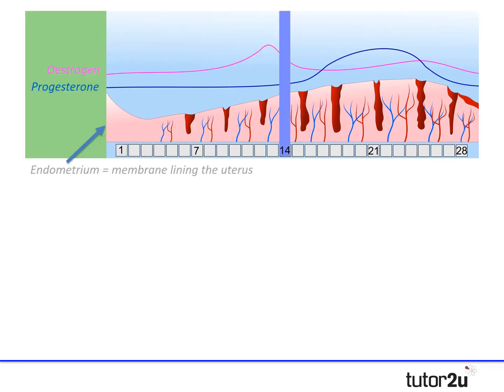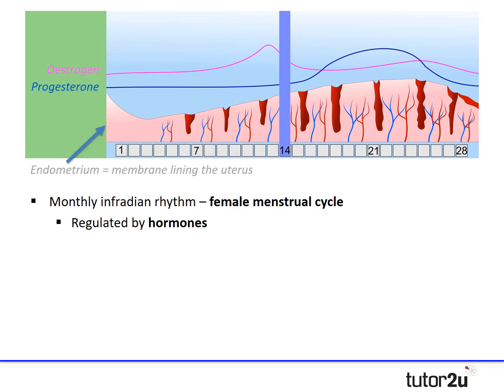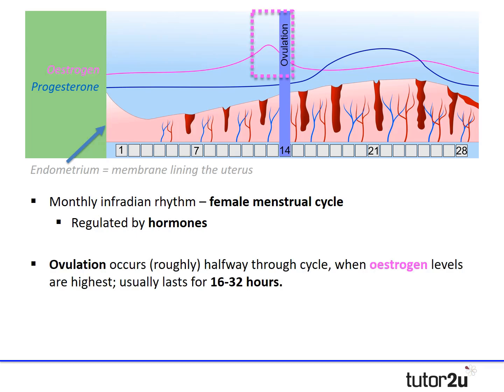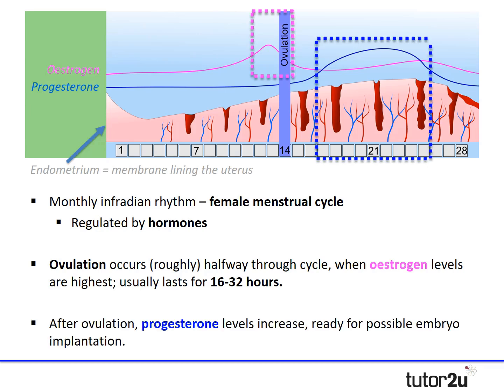An example of a monthly infradian rhythm is the female menstrual cycle, which is regulated by hormones that either promote ovulation or stimulate the uterus for fertilisation. Ovulation occurs roughly halfway through the cycle when oestrogen levels are at their highest, and usually lasts 16 to 32 hours. After ovulation, progesterone levels increase in preparation for possible implantation of an embryo, and the endometrium — the membrane lining the uterus — gets larger during this phase.